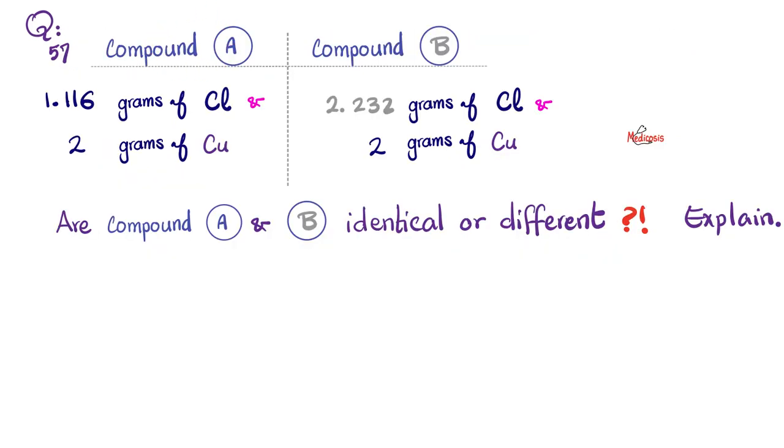Next, here is compound A, which has 1.116 grams of chlorine and 2 grams of copper. As for compound B, it had 2.232 grams of chlorine and 2 grams of copper. Are compounds A and B identical or different? Please explain your answer. This question is about the law of multiple proportions. How do I answer this? It's about the mass ratio. You get the mass ratio for A and then the mass ratio for B and then the ratio of the ratio. Let me show you.